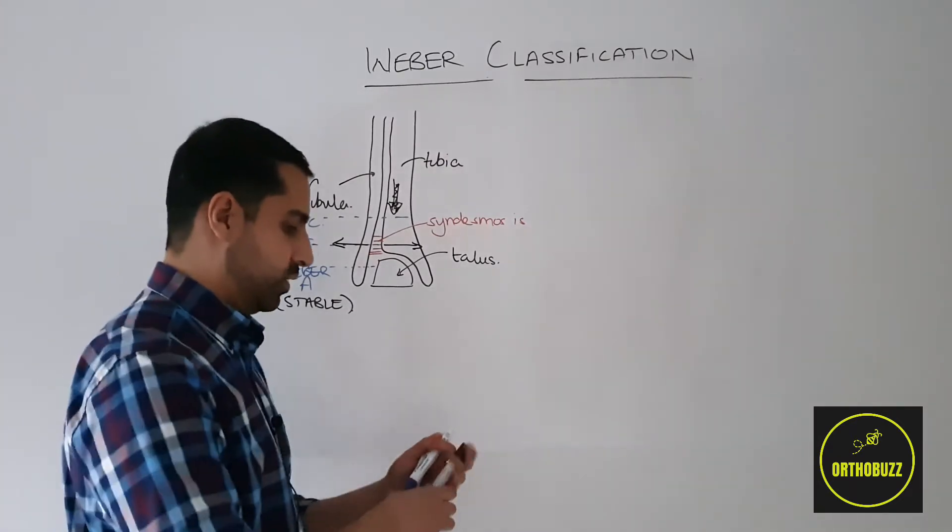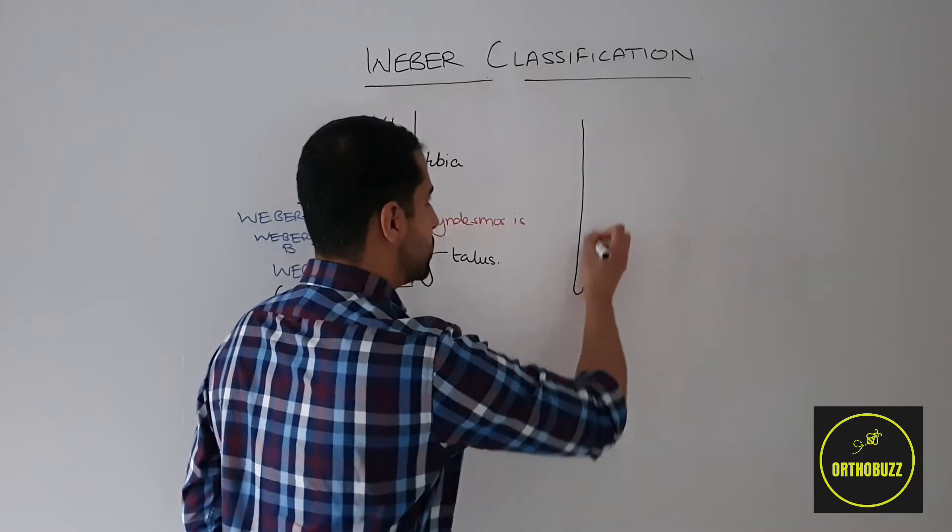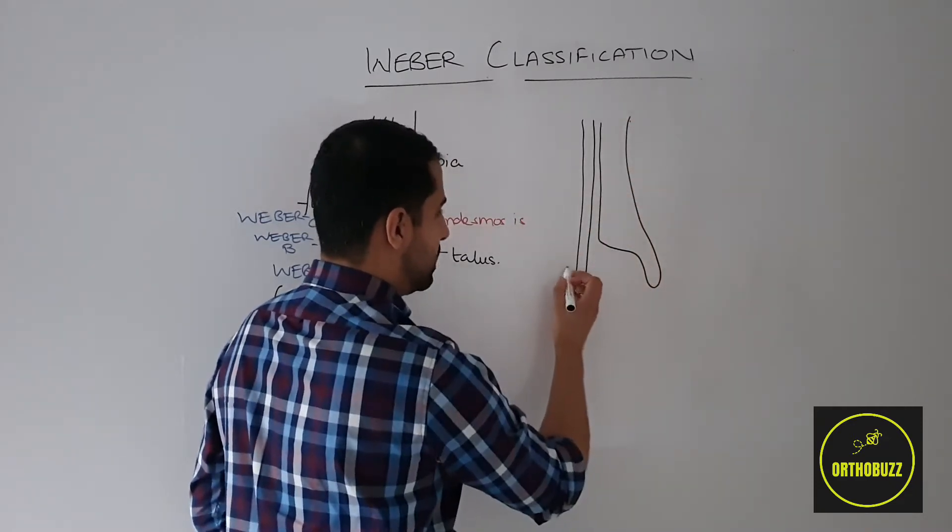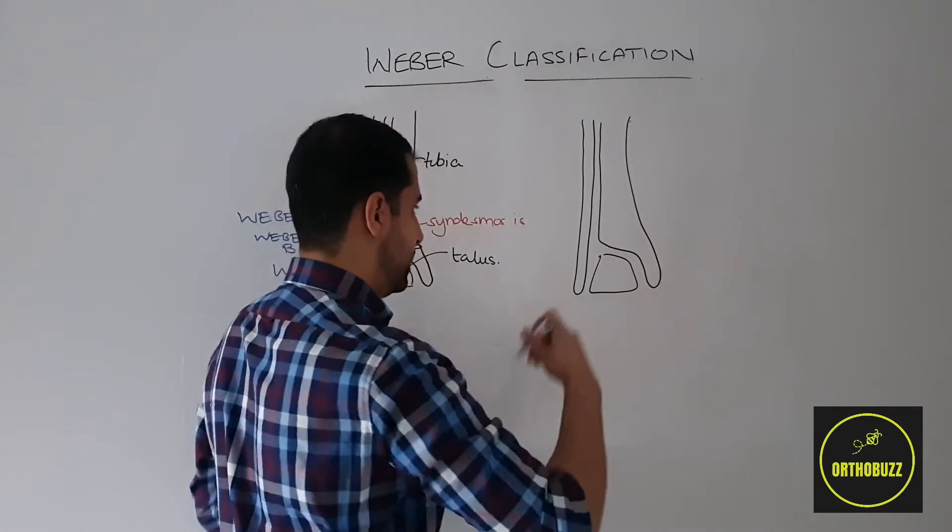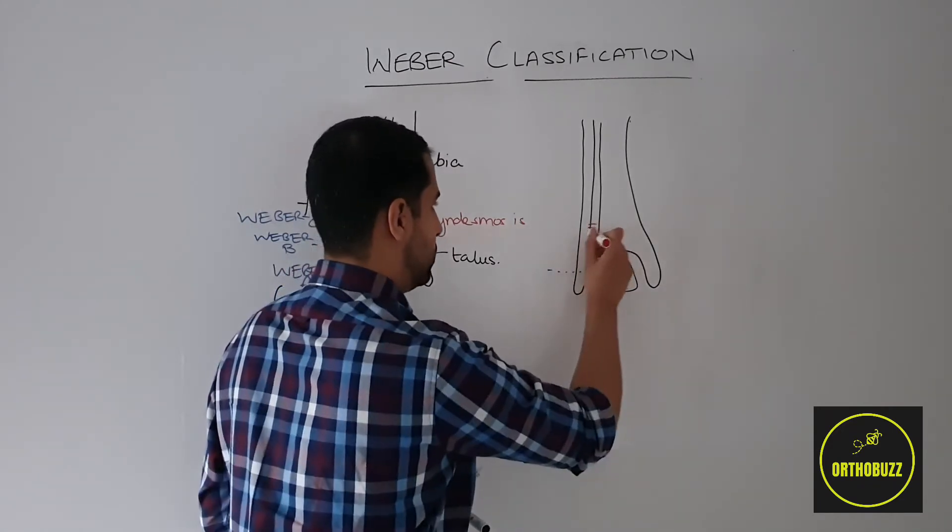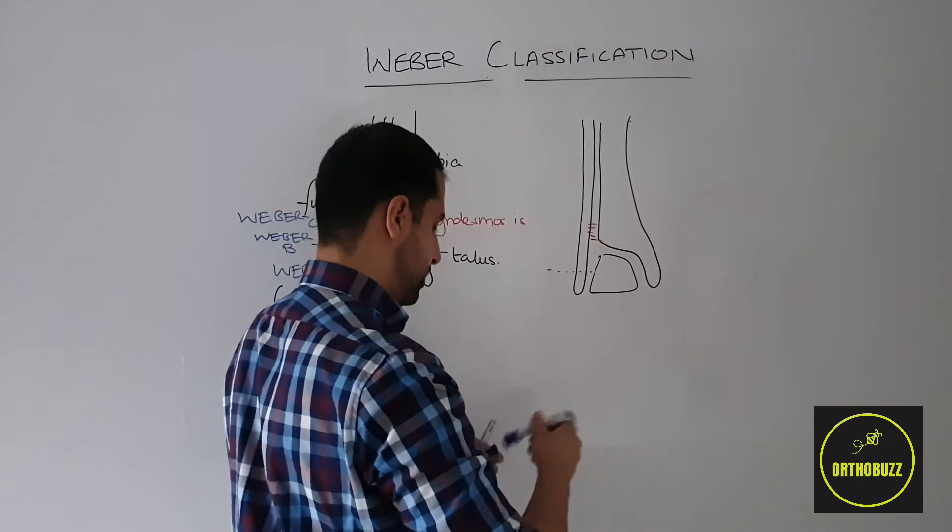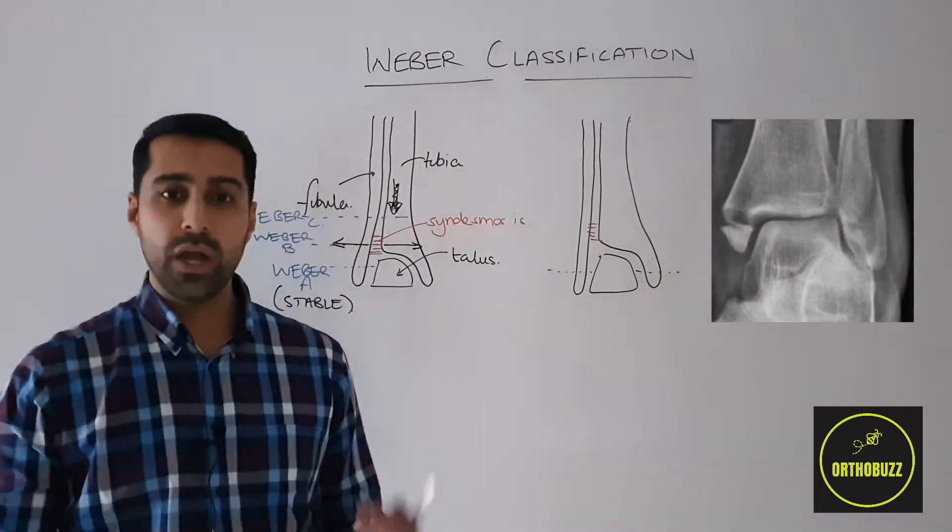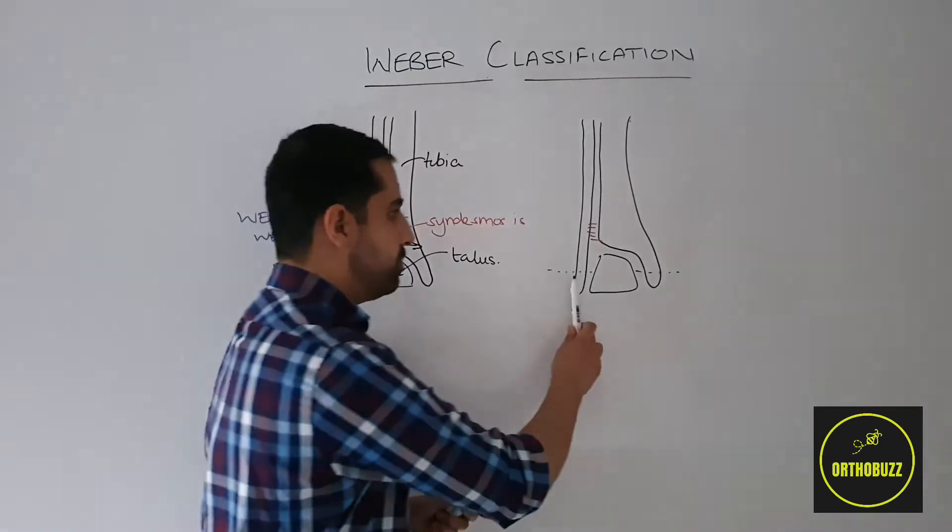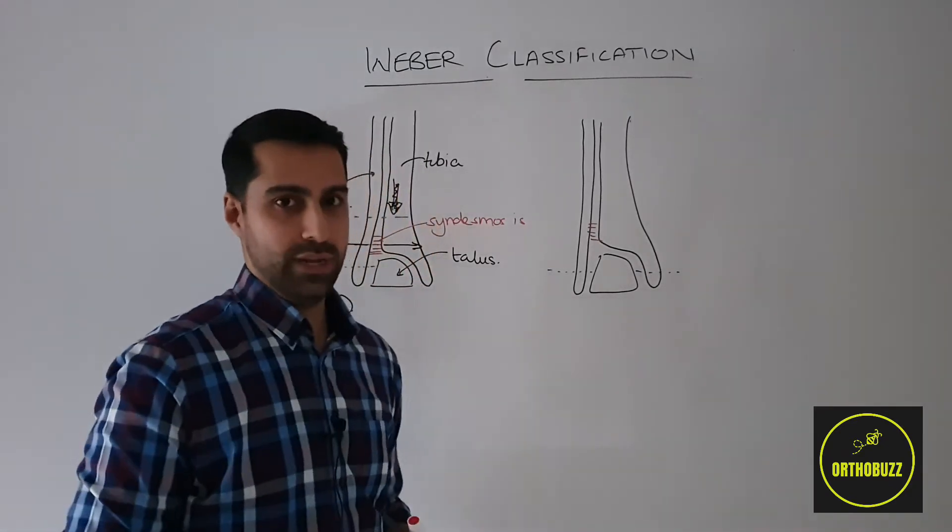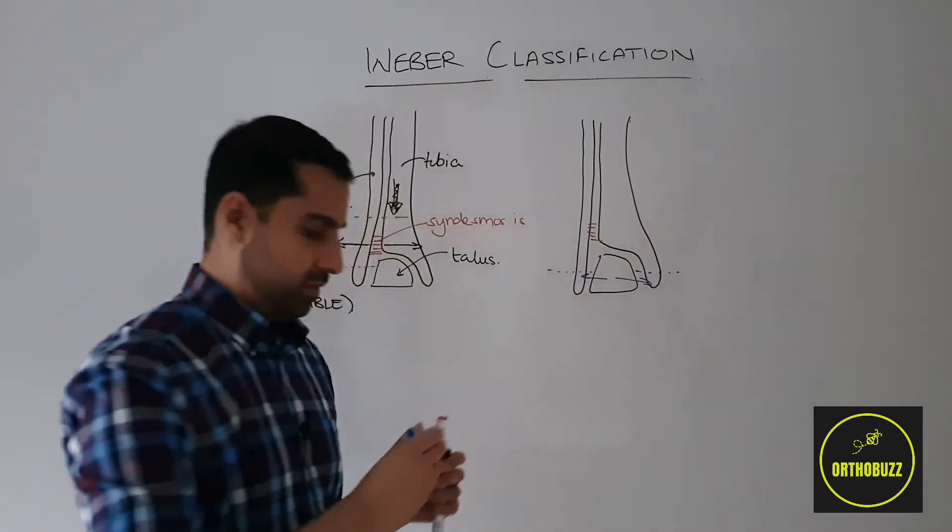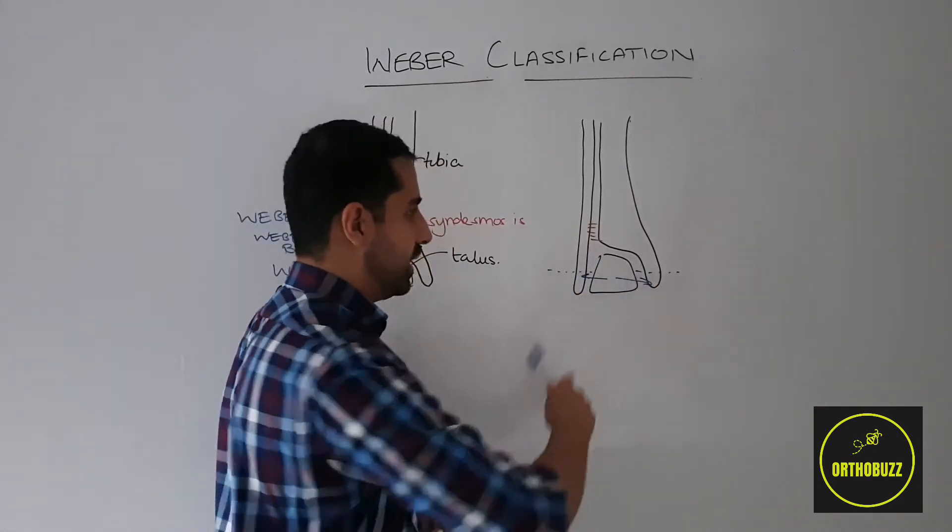Now there's a couple of caveats that I wanted to talk about with this. I talked about earlier that the Weber classification does not focus on the medial malleolus. Now let's assume that we had a Weber A ankle fracture that's distal to the syndesmosis with a medial malleolus ankle fracture as well. This is therefore a bimalleolar ankle fracture and although the fibular aspect of this is stable, once we put this together with the medial malleolus fracture, this is a bimalleolar fracture and therefore unstable. As you can imagine that the talus can move left or right or medially and laterally without having the buttress of an intact malleolus.